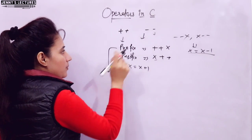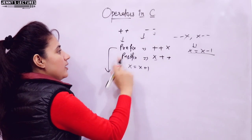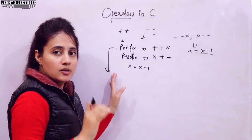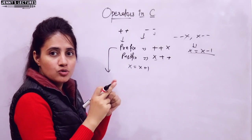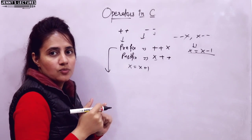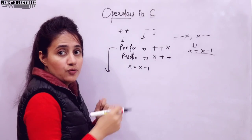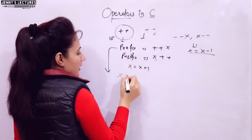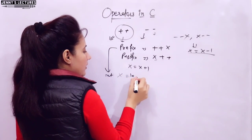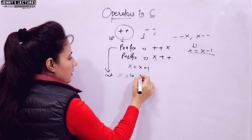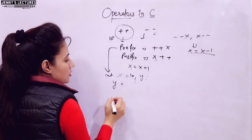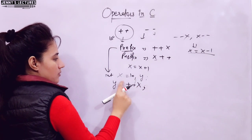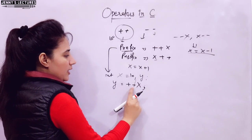Now let us discuss prefix notation — pre-increment and pre-decrement operators. In prefix notation, the value is first incremented, and then we use that updated value. Suppose int x = 10, and we take another variable y, and we write y = ++x. This is the pre-increment operator.